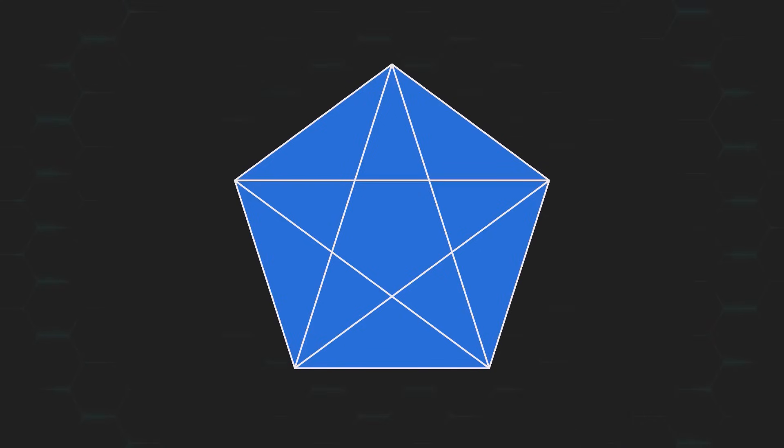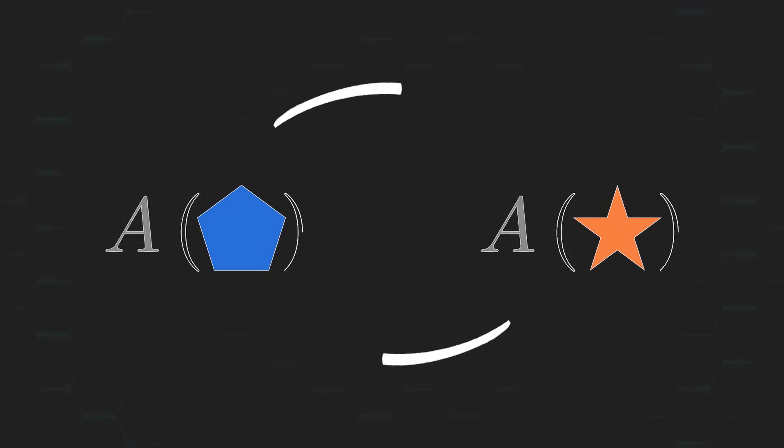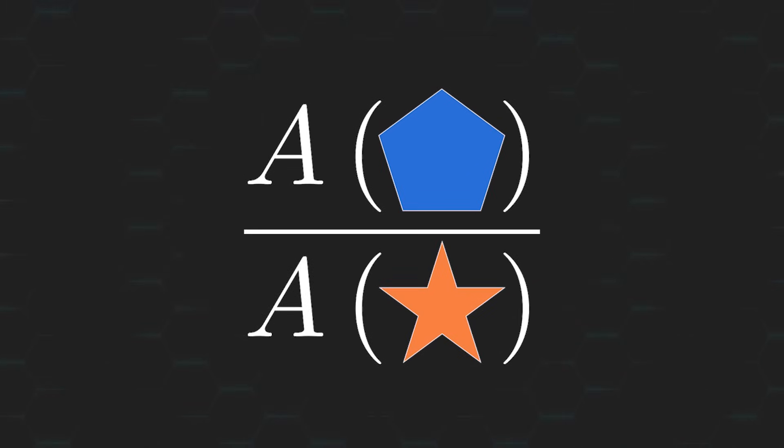Okay, fine, maybe you did know that too. You know what, I have a better one for you. If we shade in the pentagram, which gives us a star, then how does the area of the pentagon compare to the area of the star? That is, what is the exact ratio of the areas of these respective shapes?